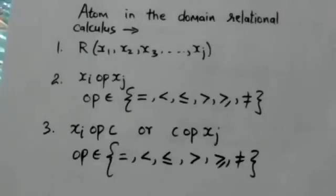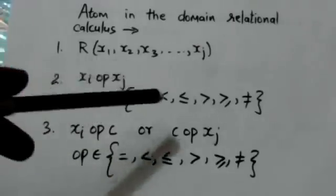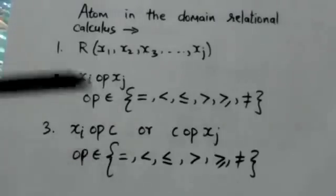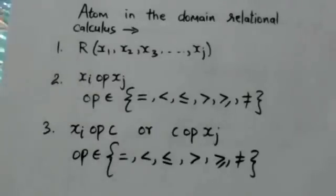The third is an atom of this form: Xi op c or c op Xj. Here Xi and Xj are domain variables, op is a comparison operator such as less than, less than or equal to, equal to, not equal to, greater than, or greater than or equal to, and c is a constant value.